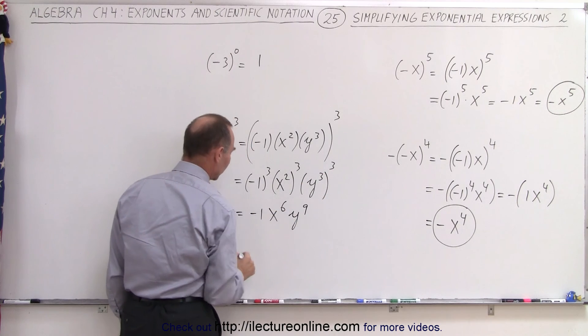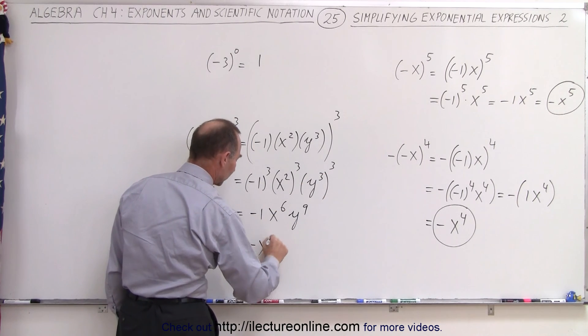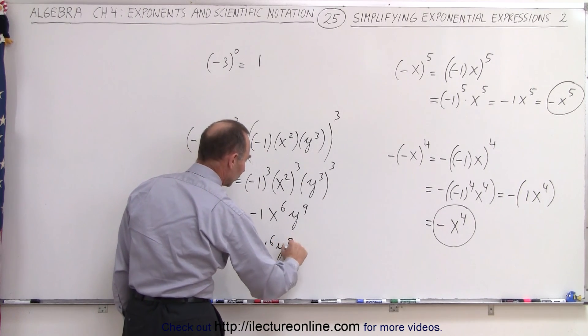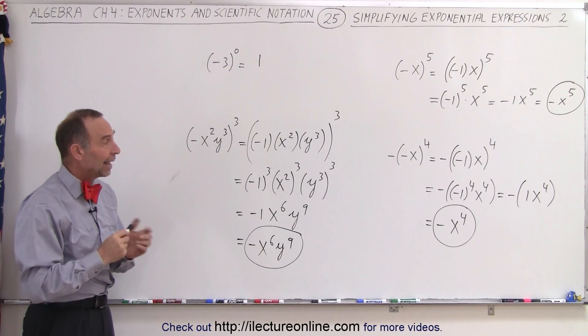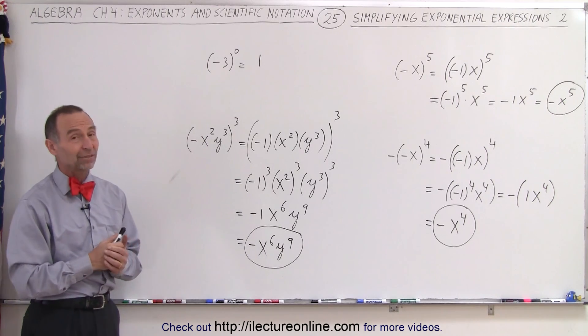And there we get y to the ninth. Again, we're multiplying exponents. So this is minus x to the sixth, y to the ninth. And that is how we deal with negative signs and exponents. There's some good examples here.